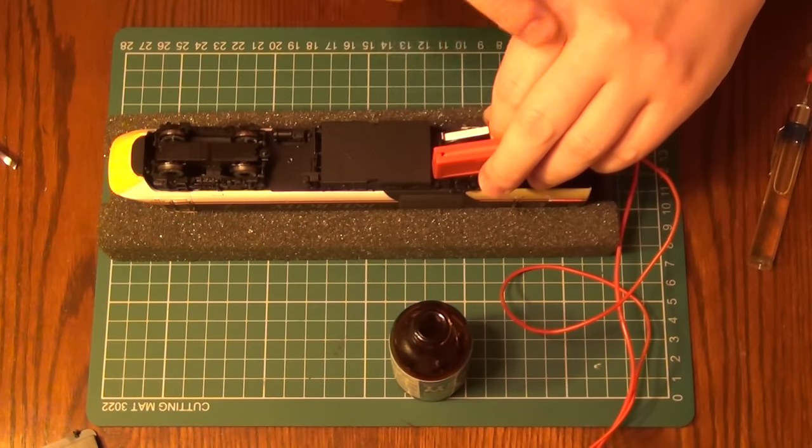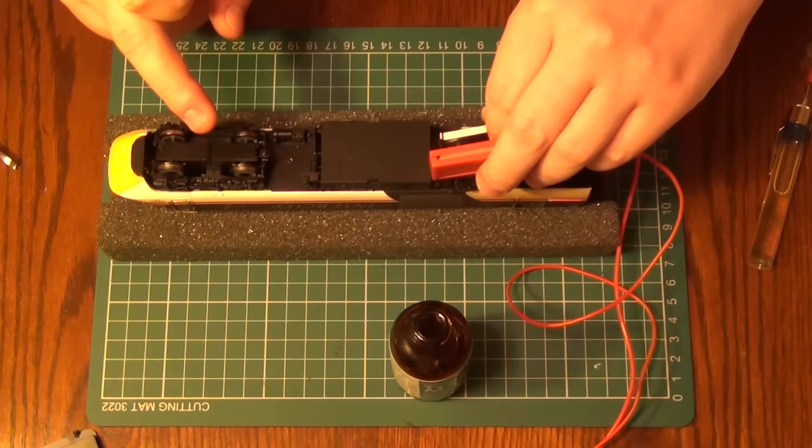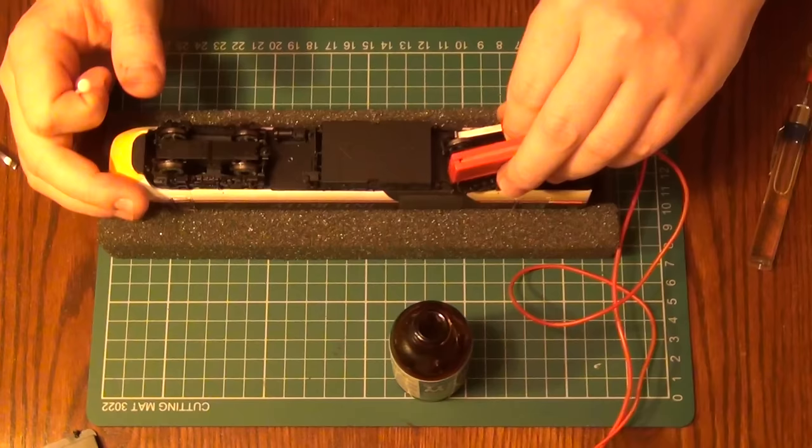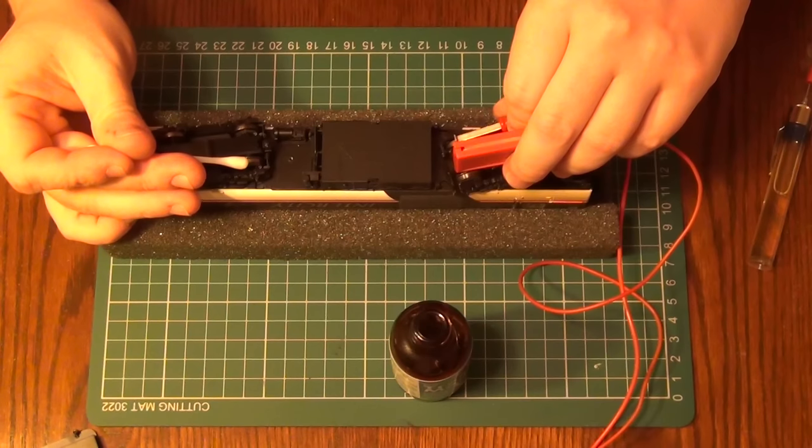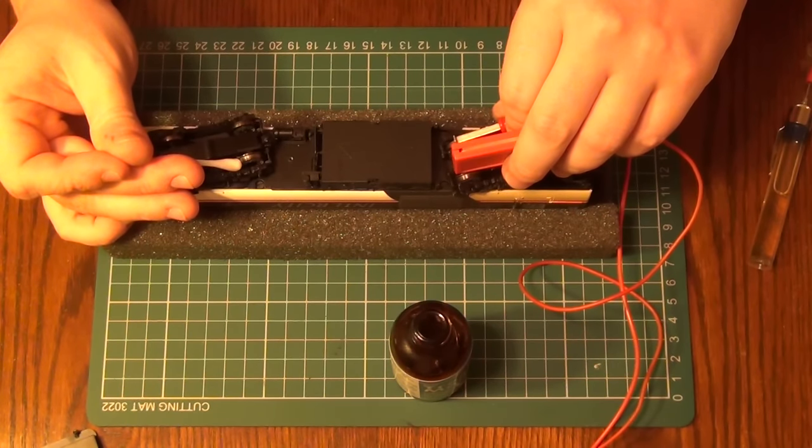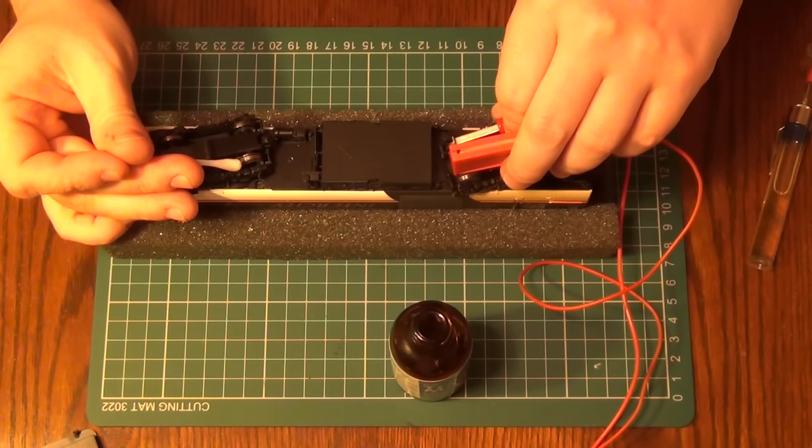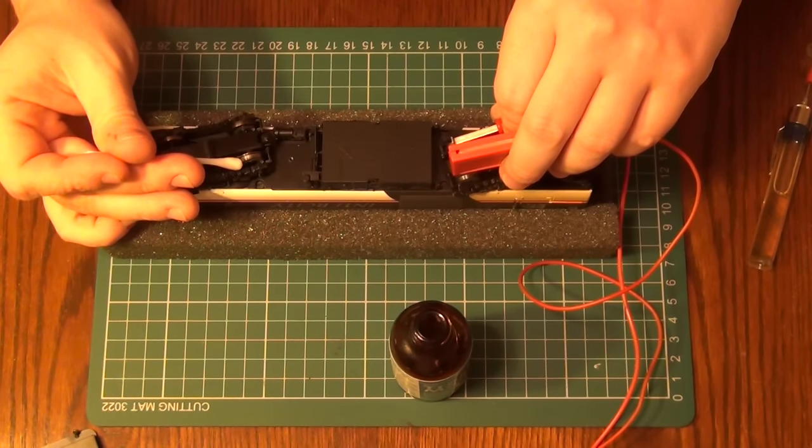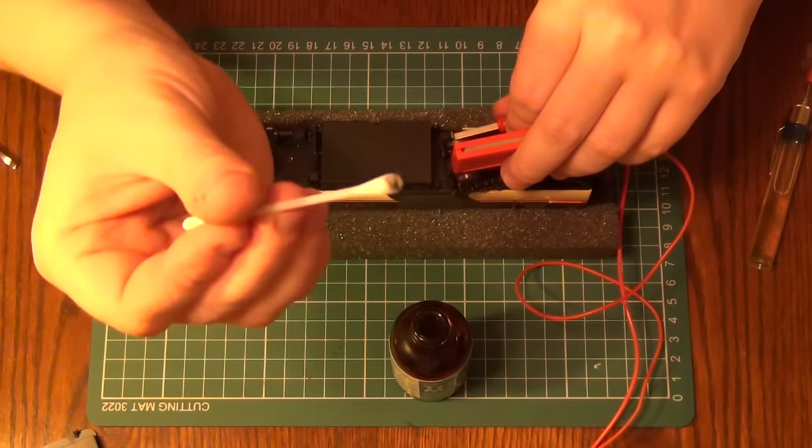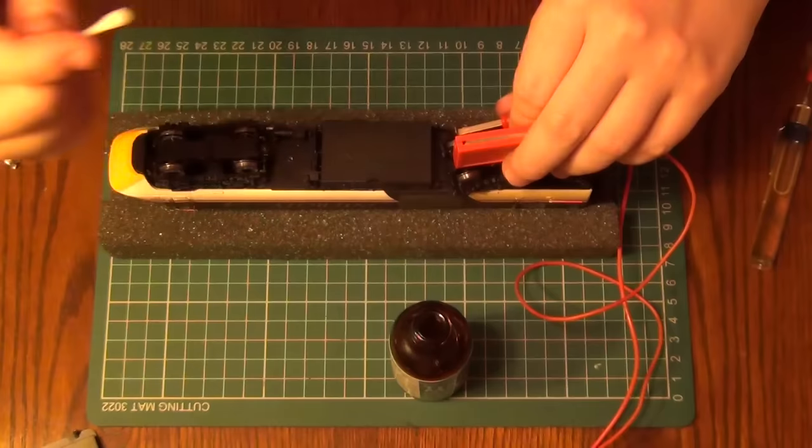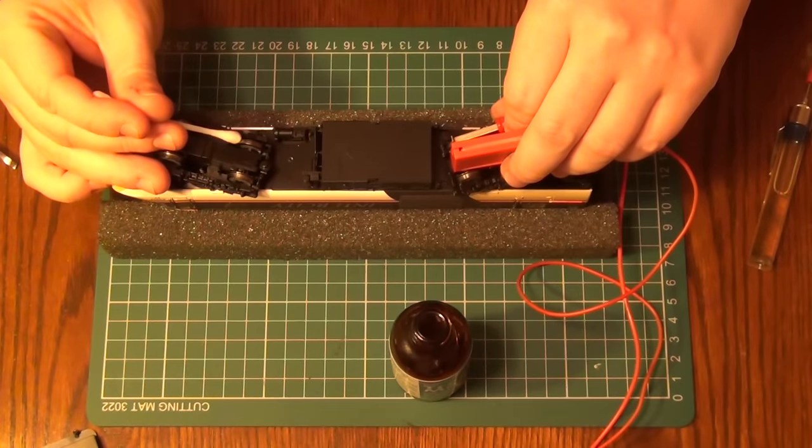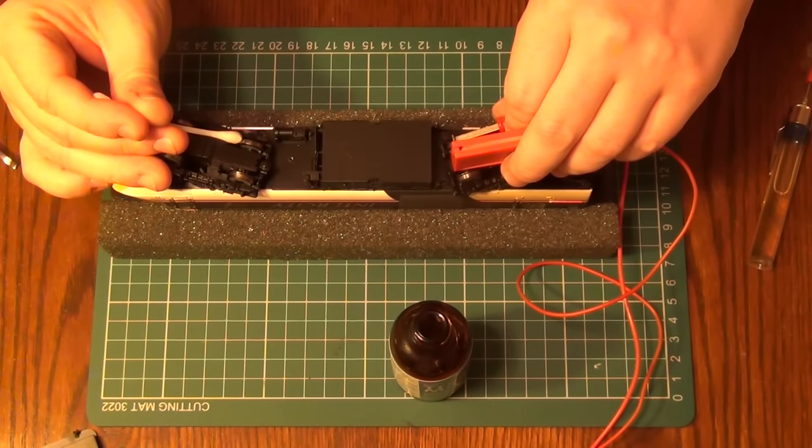But because even though I'm applying the power at this end that central drive shaft means that the wheels at this end turn so with those moving I can press my cotton wool bud against the wheel and just let it rub as it turns. And then you can see the residue that's actually built up on those wheels coming off onto the cotton wool bud there. So I'll repeat that with all the wheels on this bogey and then swap hands and do it with the other wheels at the back.